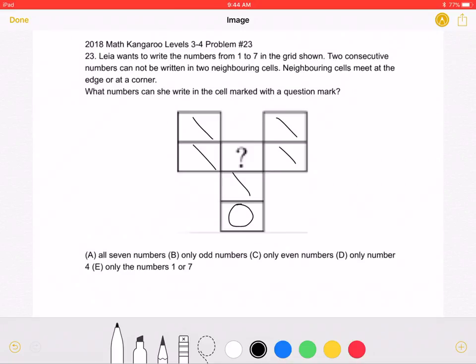Leah must write the numbers 1 through 7 into the cells. Out of these numbers, 2, 3, 4, 5, and 6 have two neighboring numbers in this set. For example, the number 2 has 1 and 3 as neighboring numbers.